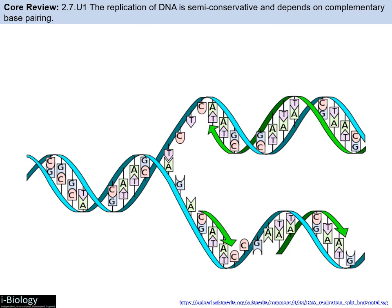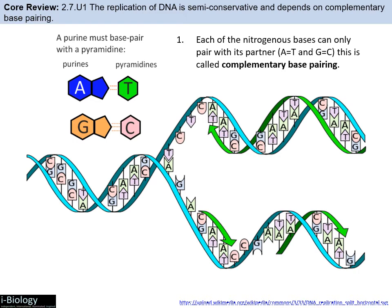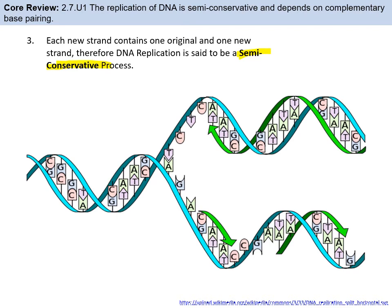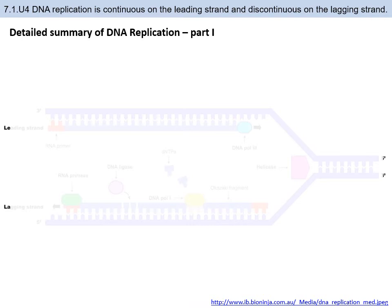Summarizing semi-conservative replication: using complementary base pairing, each parent strand guides the synthesis of a new complementary strand. Each resulting DNA molecule contains one original parent strand and one newly synthesized strand. This is why the process is called semi-conservative — each copy is half original and half new.